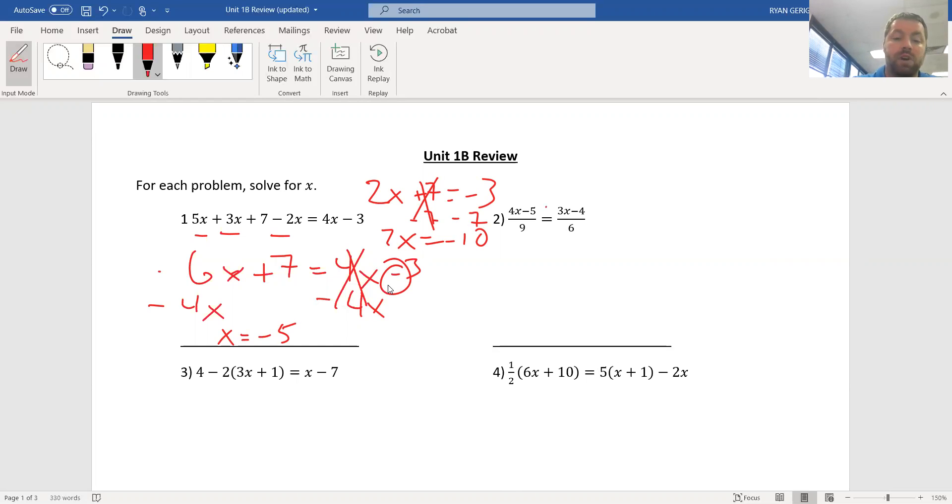Number 2 is a proportion. We solve by cross-multiplying. So, 6 times 4x minus 5 equals 9 times 3x minus 4. I'm going to move my face here. Distribute on both sides here. So, 24x minus 30 equals 27x minus 36.